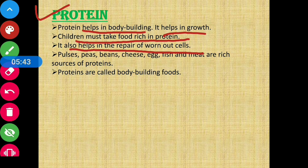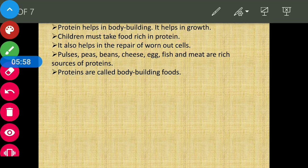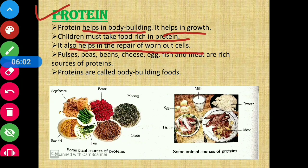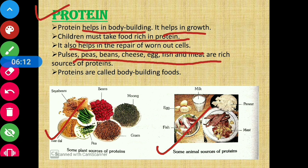If we get injured somewhere, the cells there get damaged. Protein helps repair those cells. The sources of protein include both plant and animal sources. Pulses, peas, beans, cheese, egg, fish, and meat are rich sources of protein. Protein can also be called body-building food because it helps in body building.